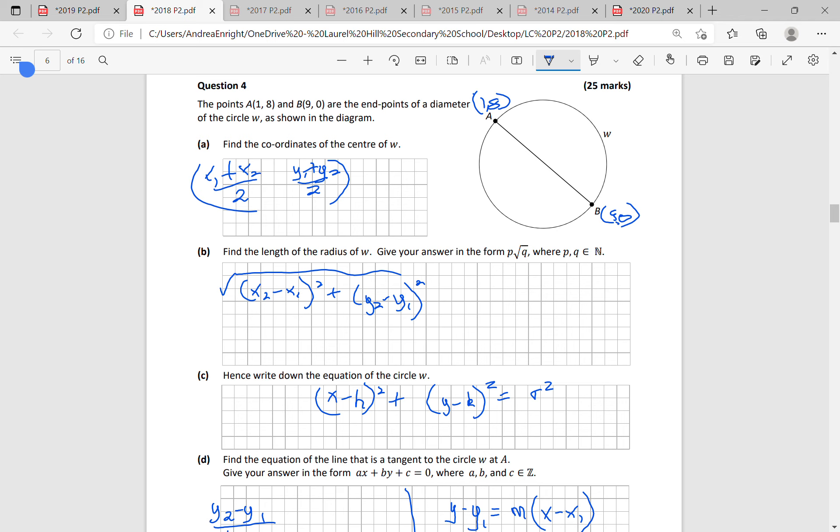So the centre is the midpoint. I have to go to the log table to get your midpoint formula. This is x1, y1 and this is x2, y2. And then it's x1 is 1 plus x2 is 9 all over 2. y1 then is 8 plus y2 is 0 all over 2.